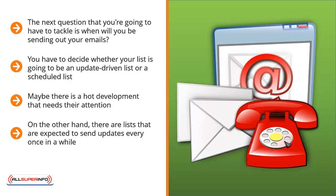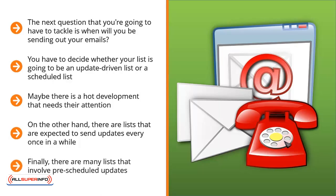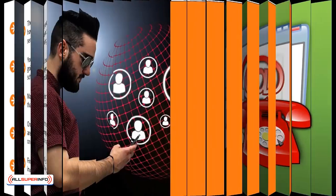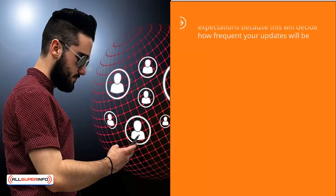Regardless of the reason, people expect to receive emails only if there is something really important. Finally, there are many lists that involve pre-scheduled updates — these are usually tutorials or autoresponder series that people specifically sign up for. For example, if I sign up for an email list promising to teach me how to trade Bitcoin on a weekly basis, I would expect to receive a tutorial email with links to instructional videos once a week.